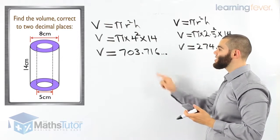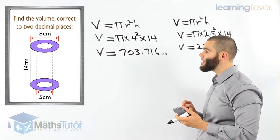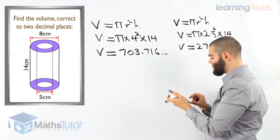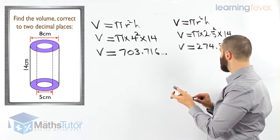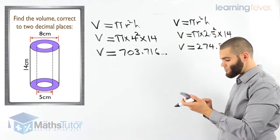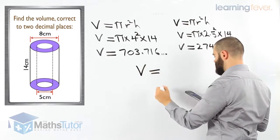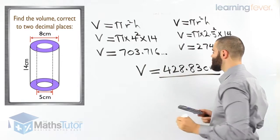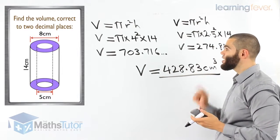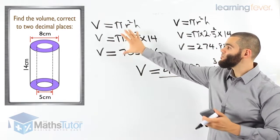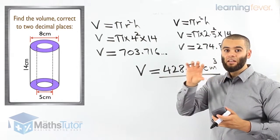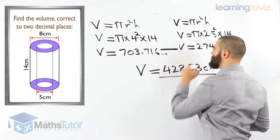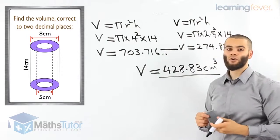Now we take away the small cylinder from the large cylinder to find the volume of the figure without the hole inside. The large cylinder is 703.716, take away 274.889. The volume is 428.83 cubic centimetres to two decimal places. 428.83 cubic centimetres — that is the volume of this figure. We worked out the total volume, took away the cylindrical hole in the middle, and got 428.83.